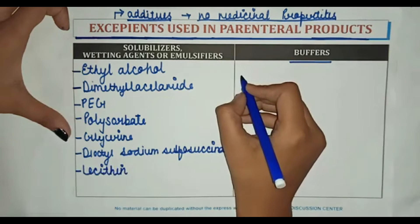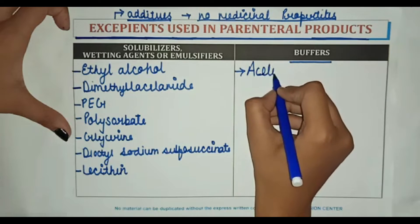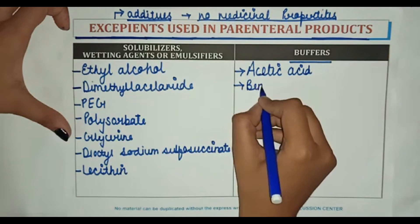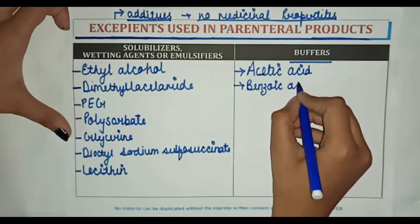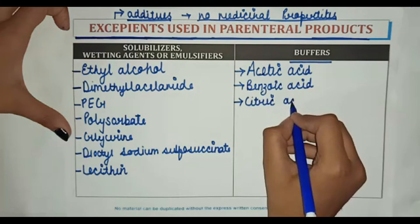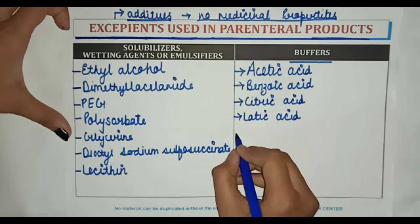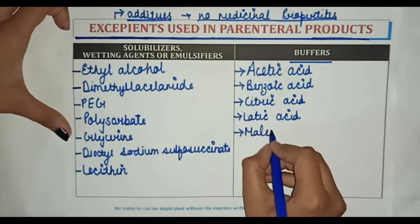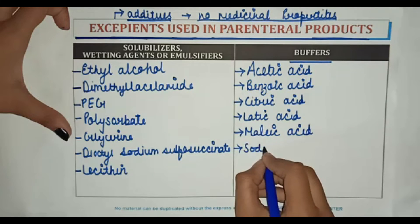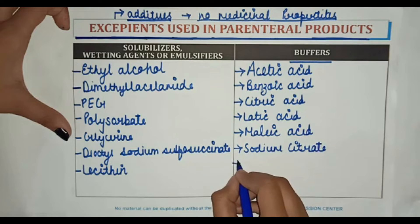Buffers used as excipients are: acetic acid, benzoic acid, lactic acid, malic acid, sodium citrate, and sodium carbonate.